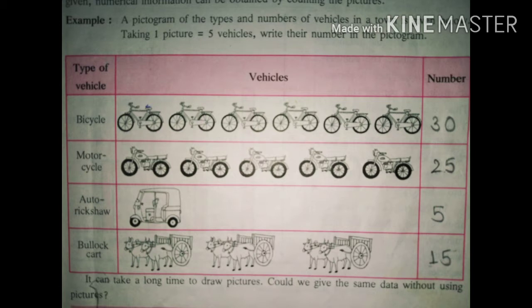For example, a pictogram of the types and numbers of vehicles in a town is given below. Taking 1 picture equals 5 vehicles, write their number in the pictogram.